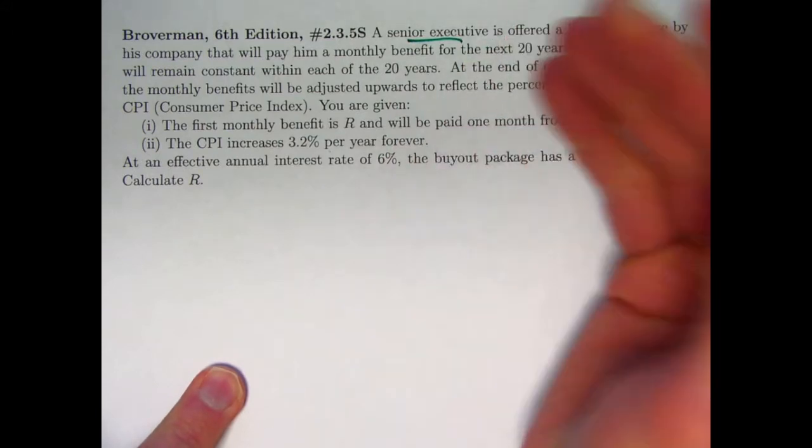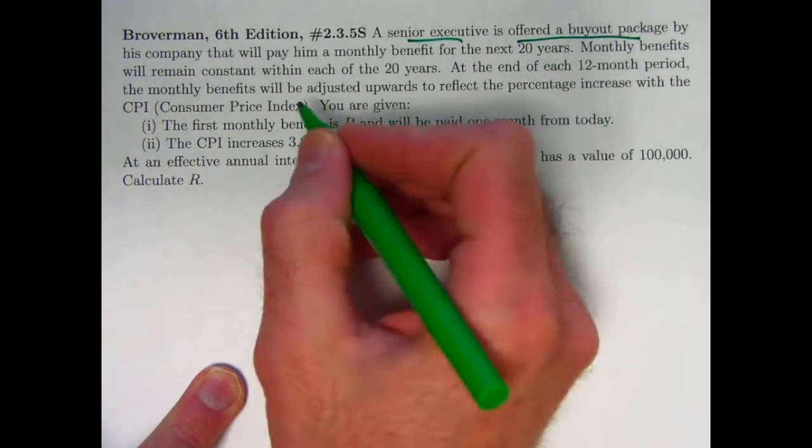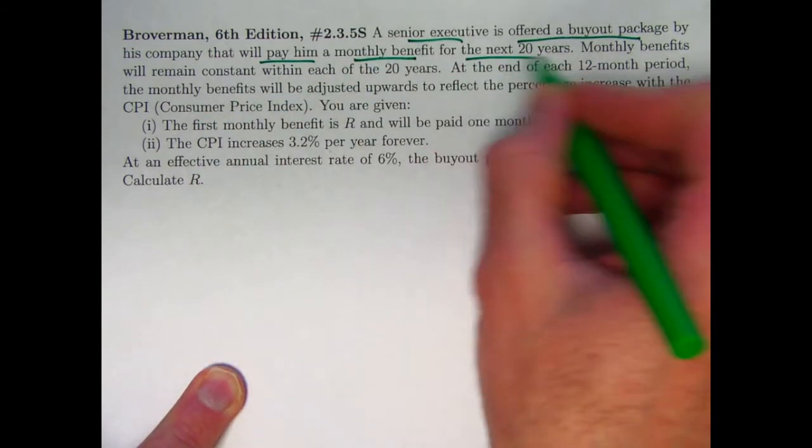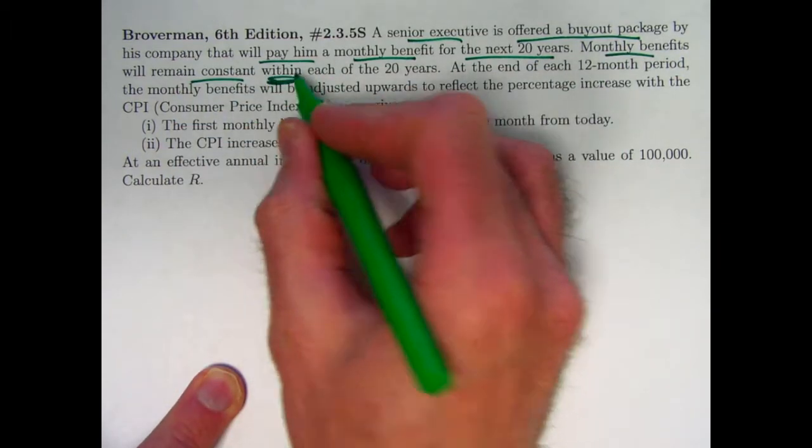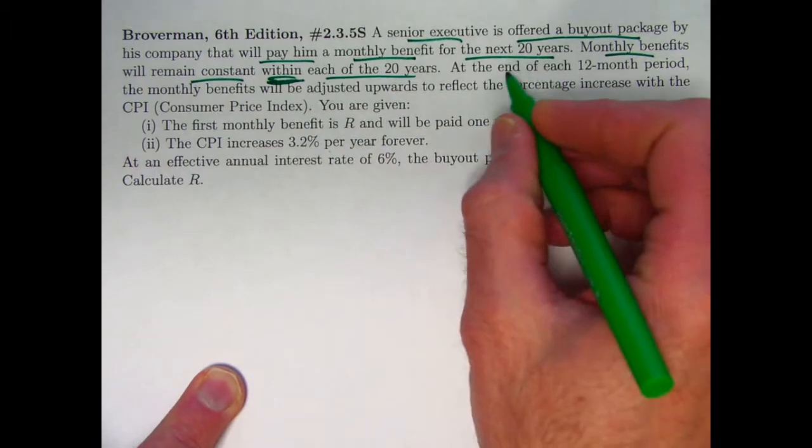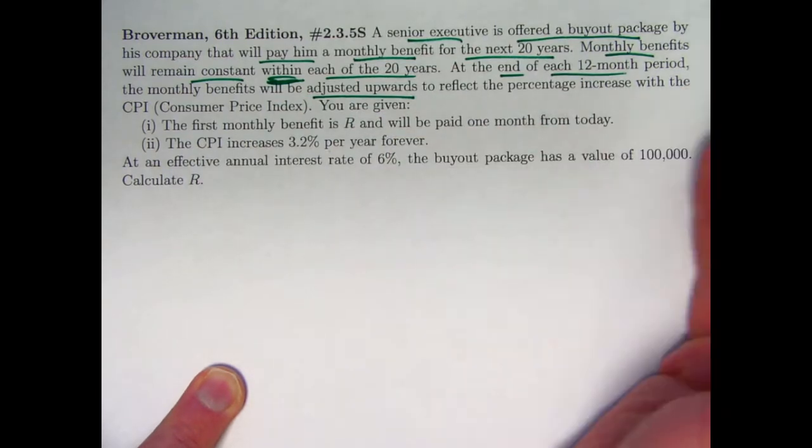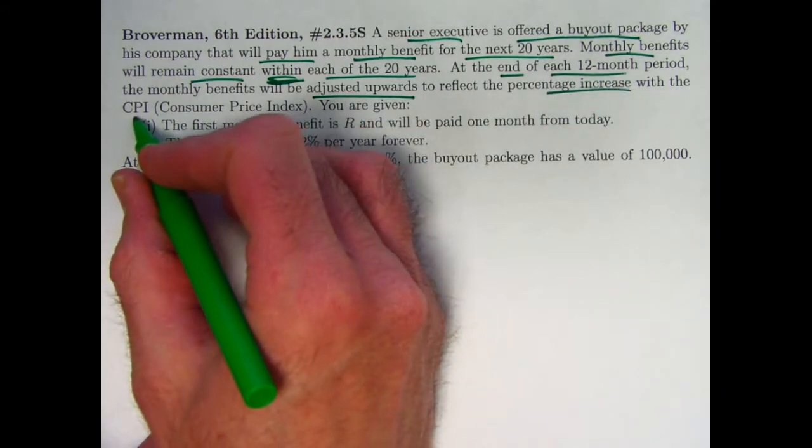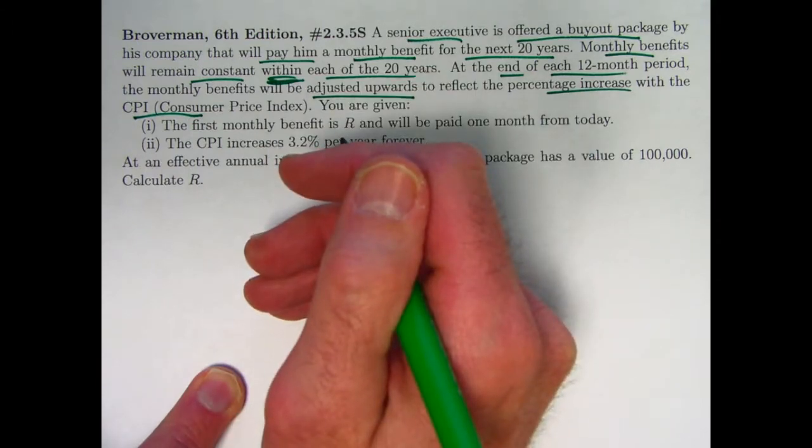So this senior executive, who's evidently being let go, is offered a buyout package that's going to pay him a monthly benefit every month for the next 20 years. During each year, monthly benefits are constant within each of the 20 years, but then at the end of each year, the monthly benefits are adjusted upwards to reflect inflation, with a percentage increase with the Consumer Price Index, CPI, a government number that helps people keep track of inflation.